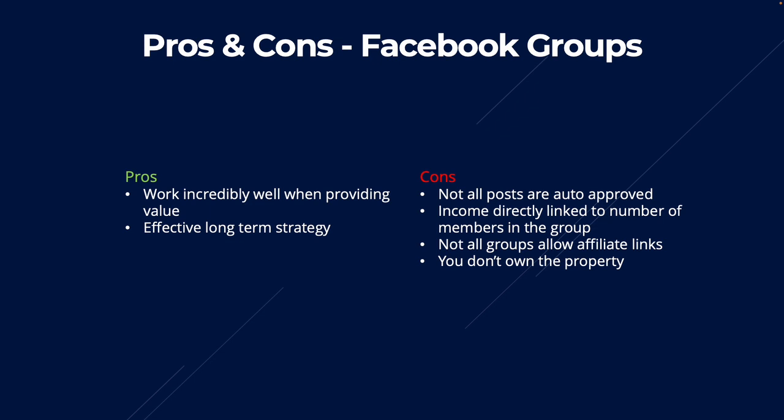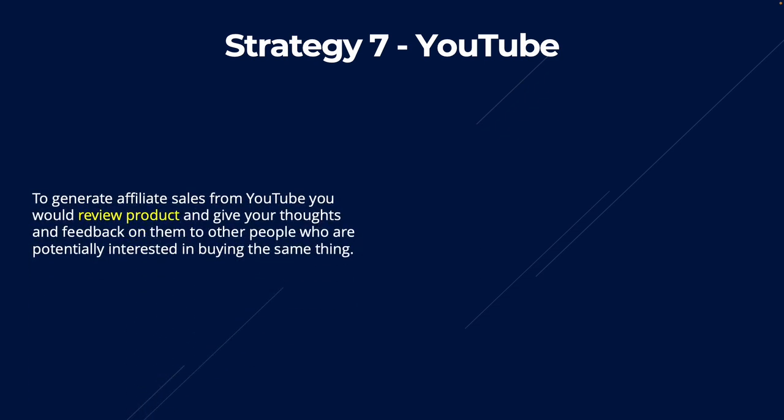Moving on to the seventh and final strategy, which is YouTube. YouTube is arguably the strategy with the biggest barrier to entry. To generate affiliate sales from YouTube, there is a lot of work that goes into it, such as planning out the videos, recording them, editing them, uploading, and then promoting. But pretty much to generate sales from YouTube, you would review a product and give your thoughts and feedback to people who are also potentially interested in buying the same thing, then include an affiliate link in the description of the video — which is how you'd make your money.